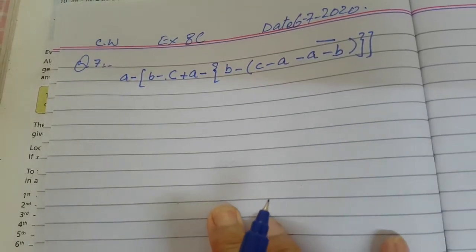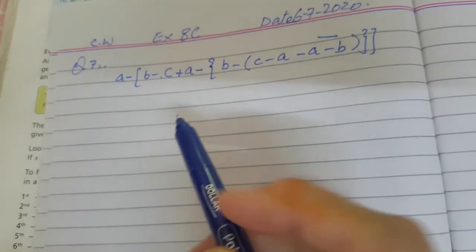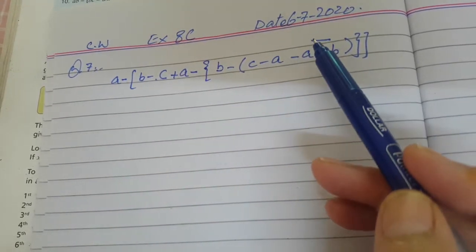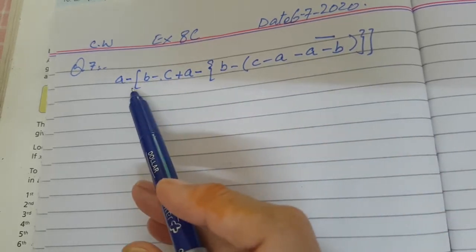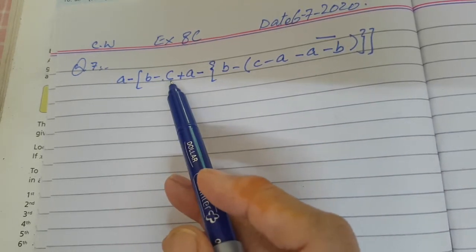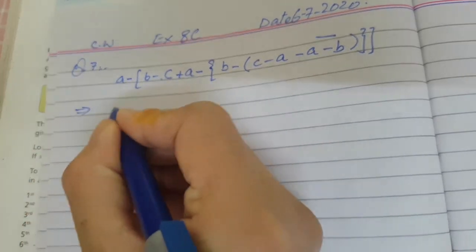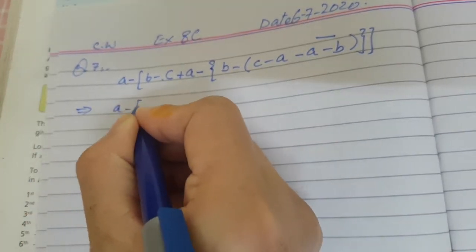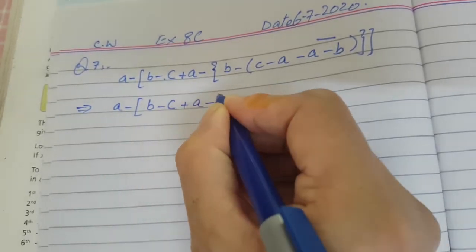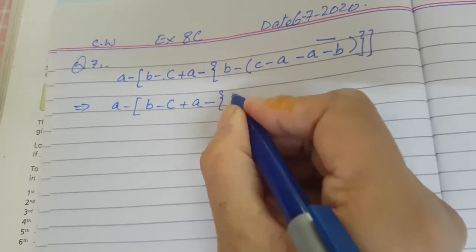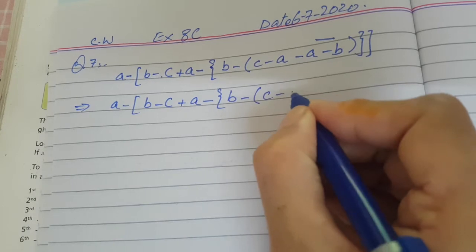Okay dear children, now we will do question number 7 of exercise 8c. In this question we have got all the brackets: the vinculum, the parentheses, braces and square brackets, and the variables a, b and c everywhere. Let's start the question: a minus b minus c plus a minus braces b minus parenthesis star c minus a minus a.